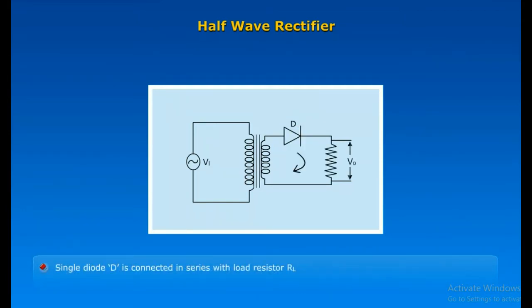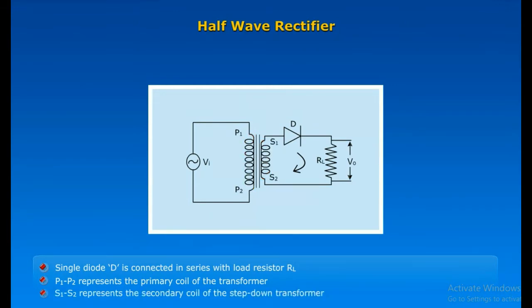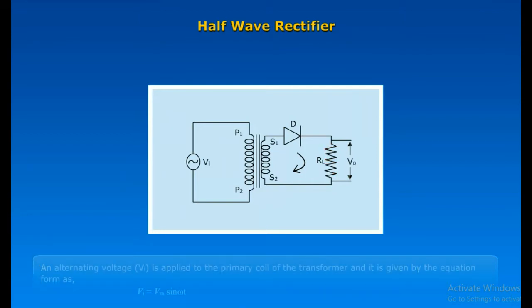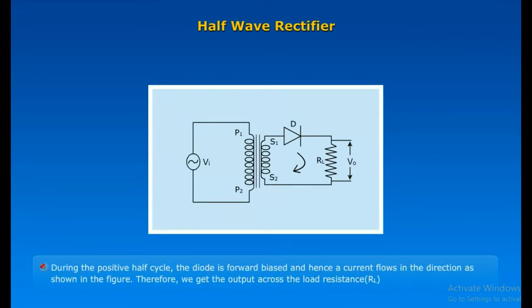A single diode D is connected in series with load resistor RL. P1-P2 represents the primary coil of the transformer, and S1-S2 represents the secondary coil of the step-down transformer. Output is taken across the load resistor RL. An alternating voltage to be rectified, VI, is applied to the primary coil of the transformer and is given by the equation form.